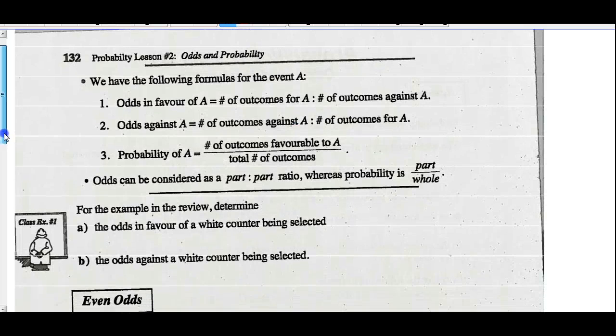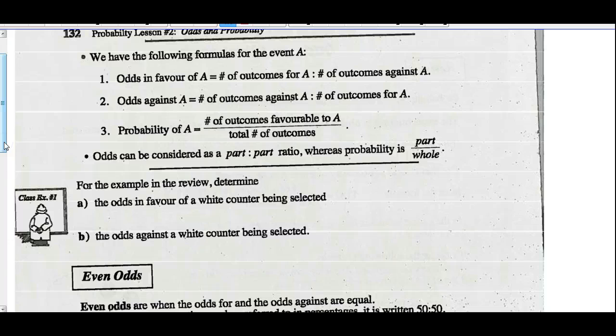We have the following formula for the event A. Odds in favor of A would be the number of outcomes for A, and that's opposed to the number of outcomes against A. Odds against would be the other way around. The number of outcomes against A as opposed to the number of outcomes for A, and the probability of A would be the number of favorable outcomes of A divided by the total number of outcomes possible. Odds could be considered as a part-part ratio. Very important to remember that. Odds is a part-part ratio. Probability is a part-whole ratio.